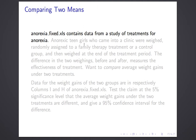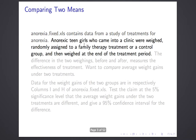I'm going to start with an example. This is a study — the data is in a file called anorexiafix.xls. It's a study of the treatment of anorexia. All the anorexic teen girls who came in seeking treatment in a given month were weighed, then assigned to one of two treatments: either a family therapy treatment or a control group, and then weighed at the end of the treatment period.